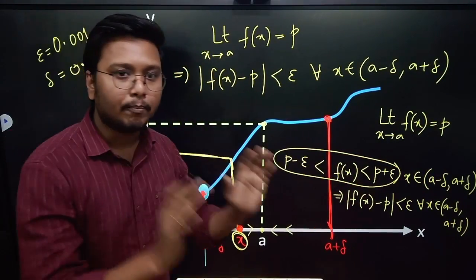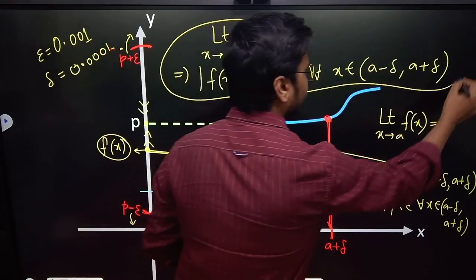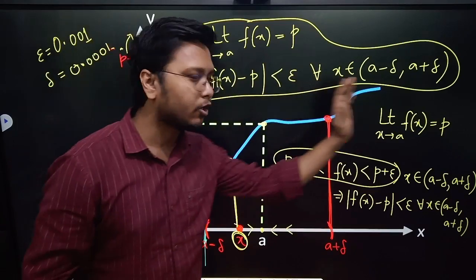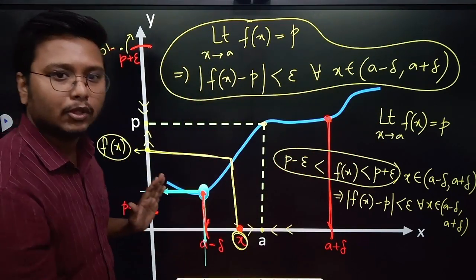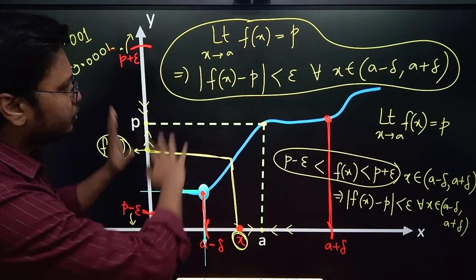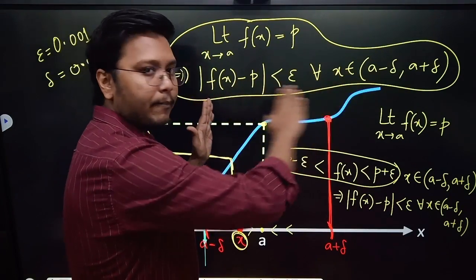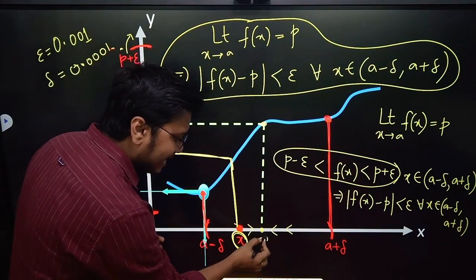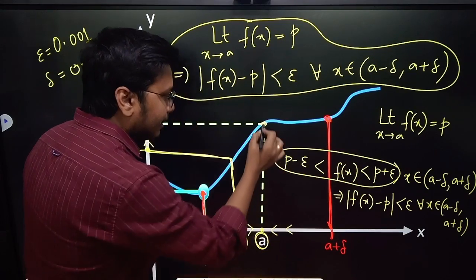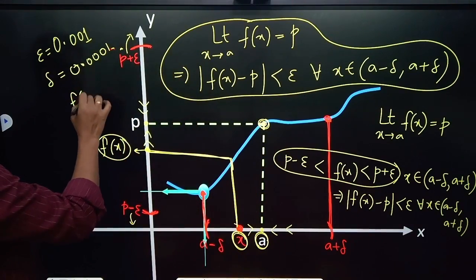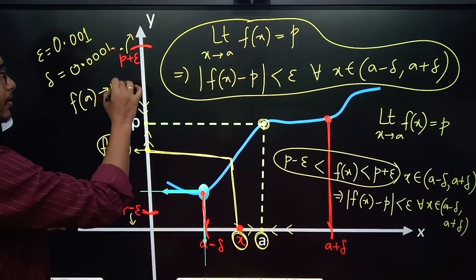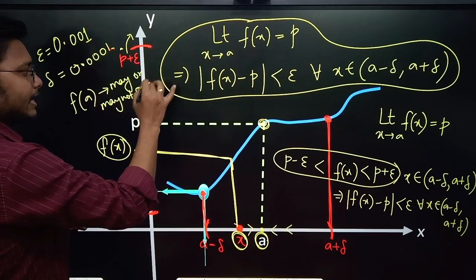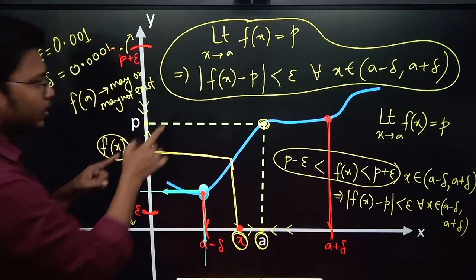You must be studying this somewhere in real analysis and may have come across this definition, but what a beautiful demonstration we have here. With this demonstration you can quickly understand what is happening in this inequality. Remember one more important thing: exactly at the point a, f(a) may or may not exist. Exactly at the point a, the limit may or may not exist.